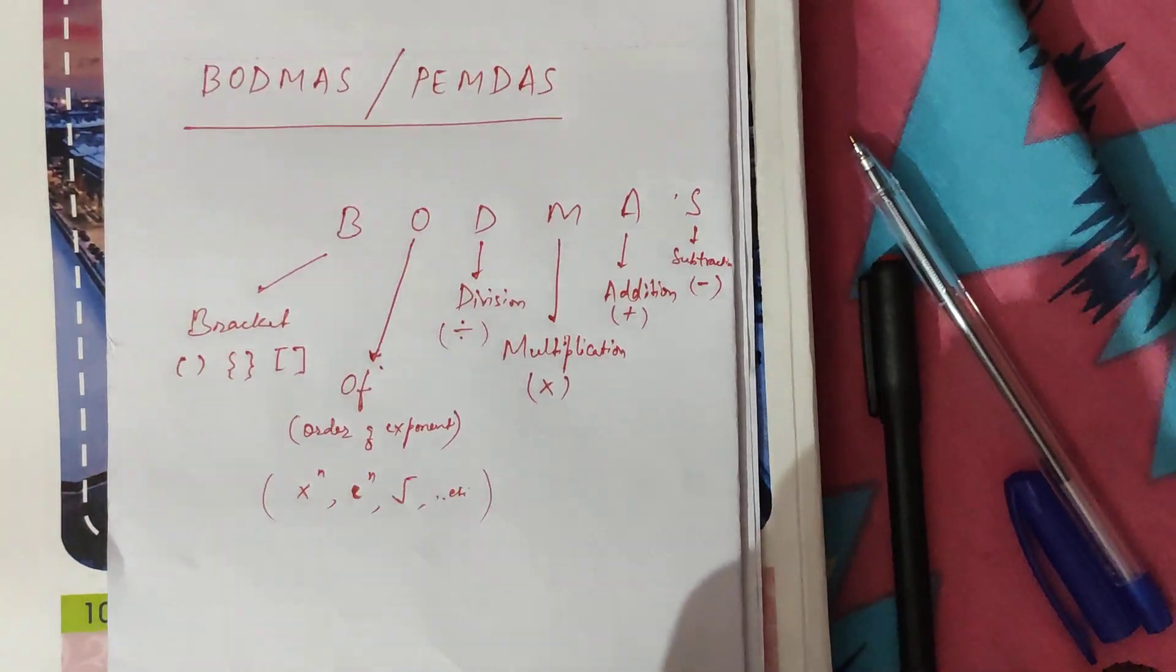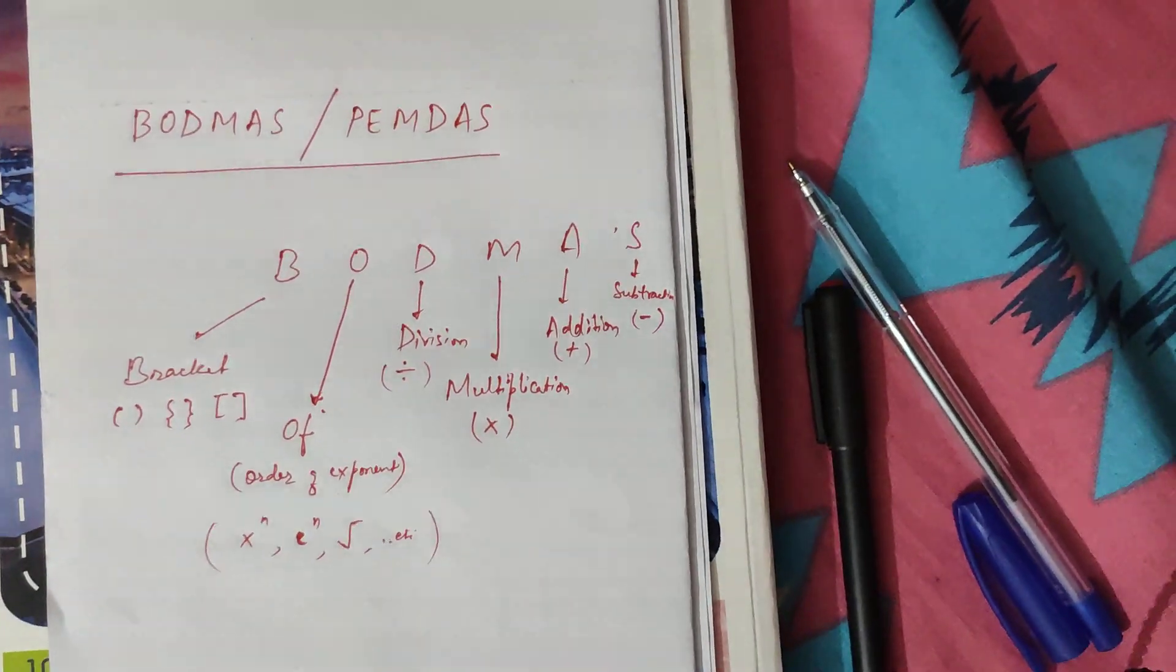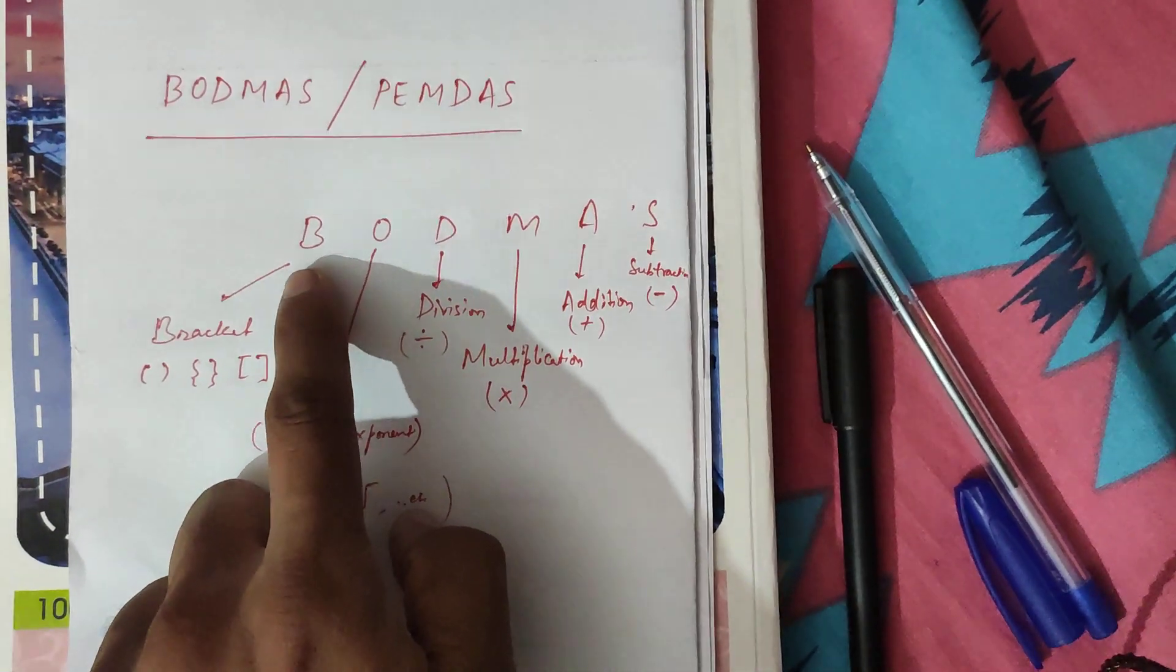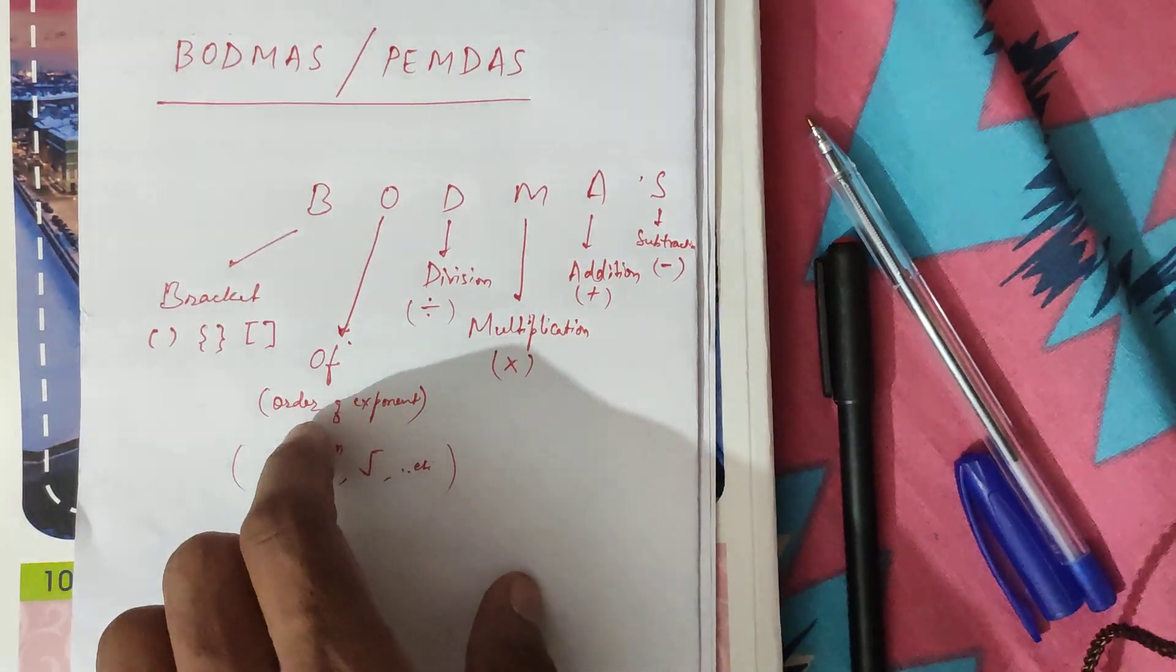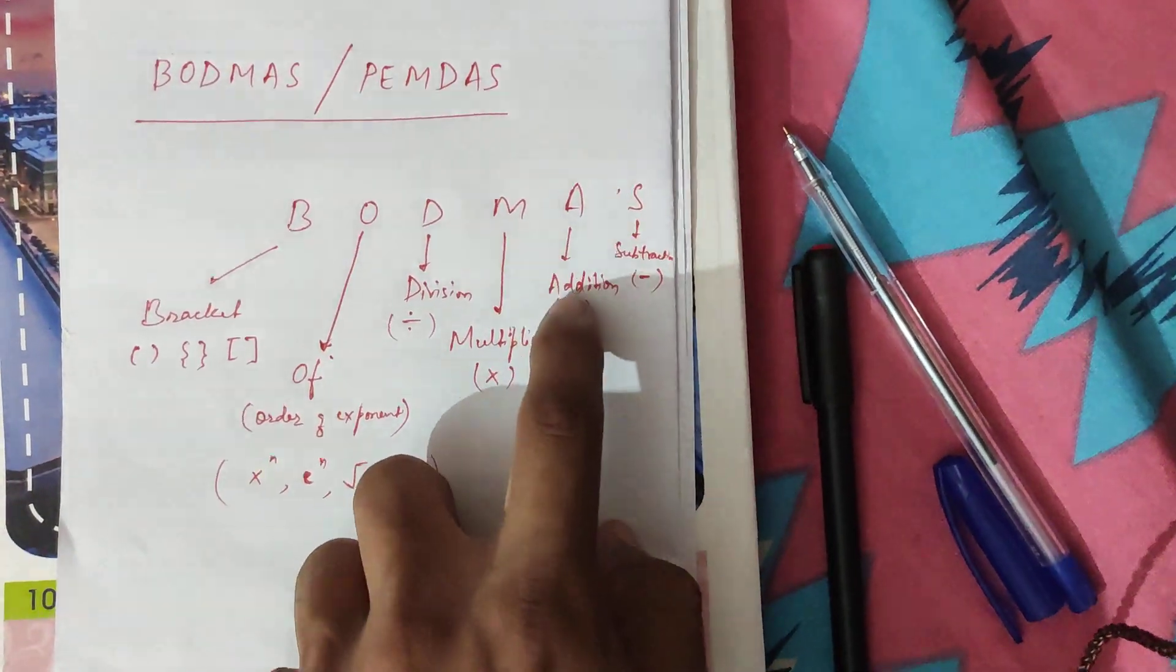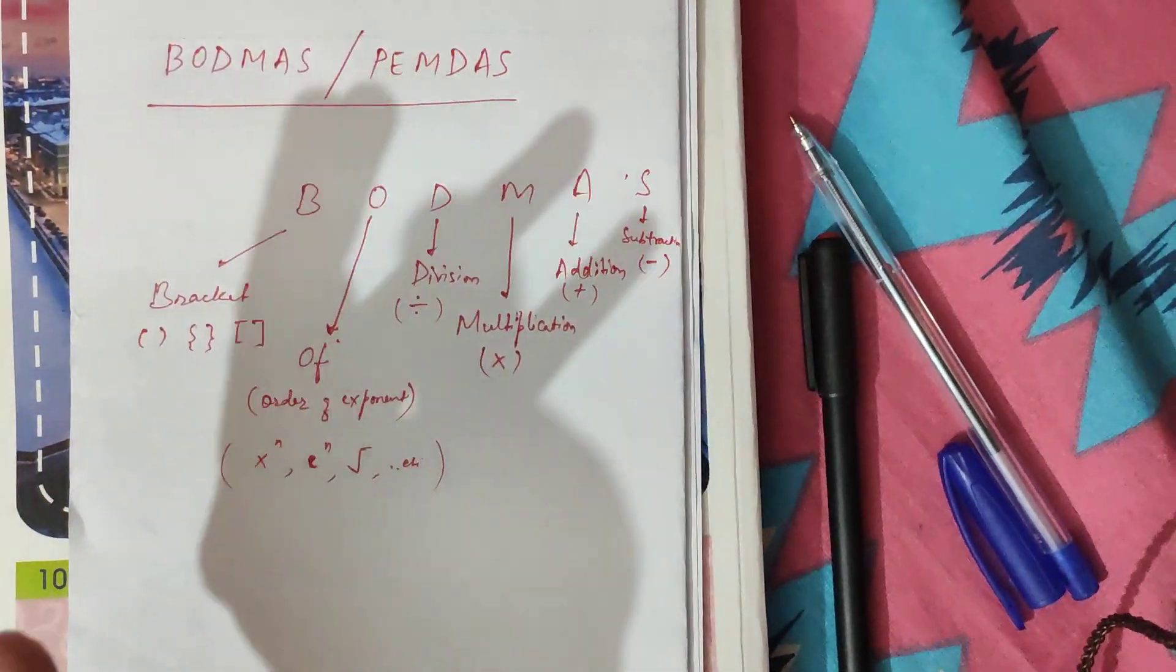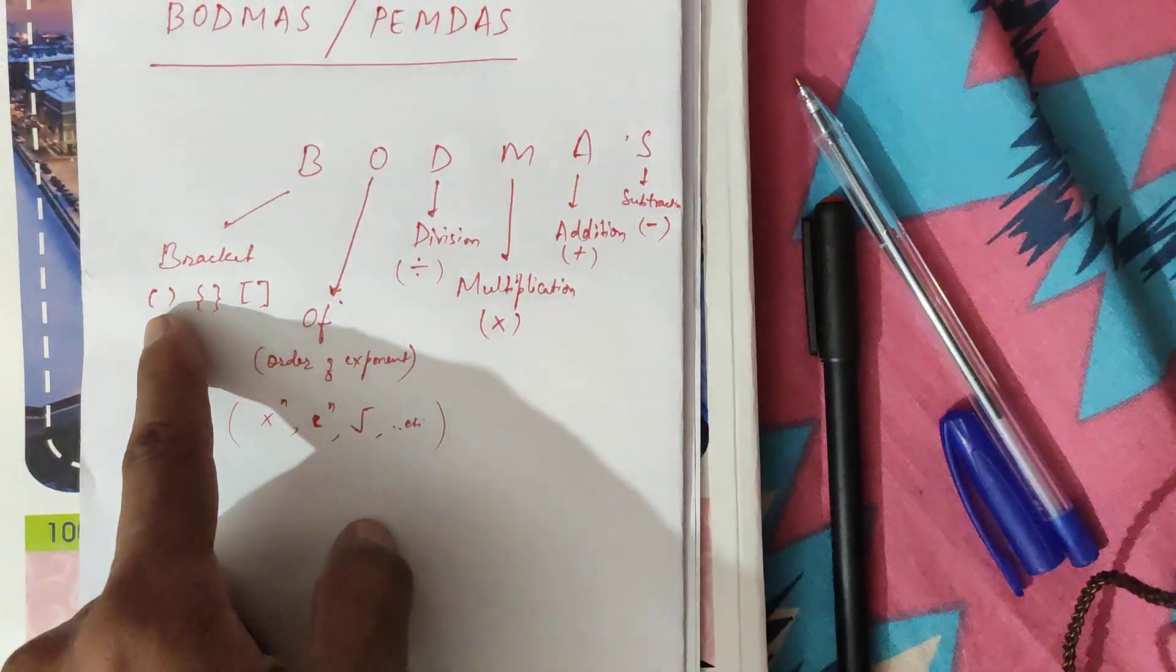BODMAS stands for Brackets, then O for Order of exponents, D for Division, M for Multiplication, A for Addition, and S for Subtraction. For the brackets there is an order: first we solve the small bracket, then the curly bracket, and then the square brackets.